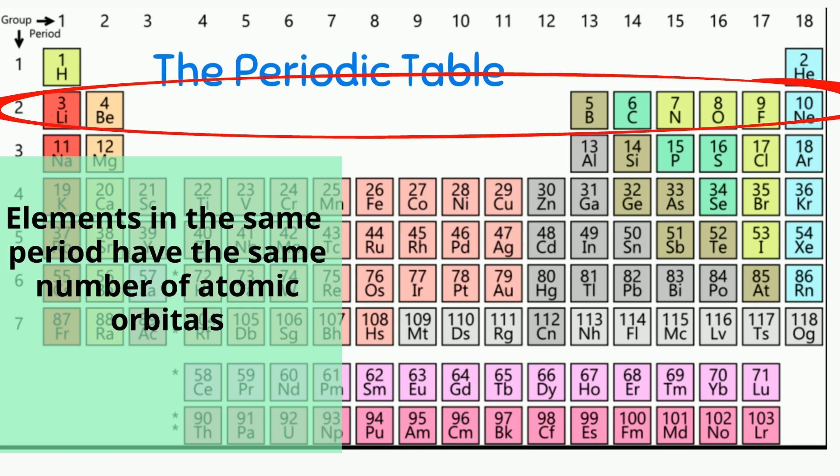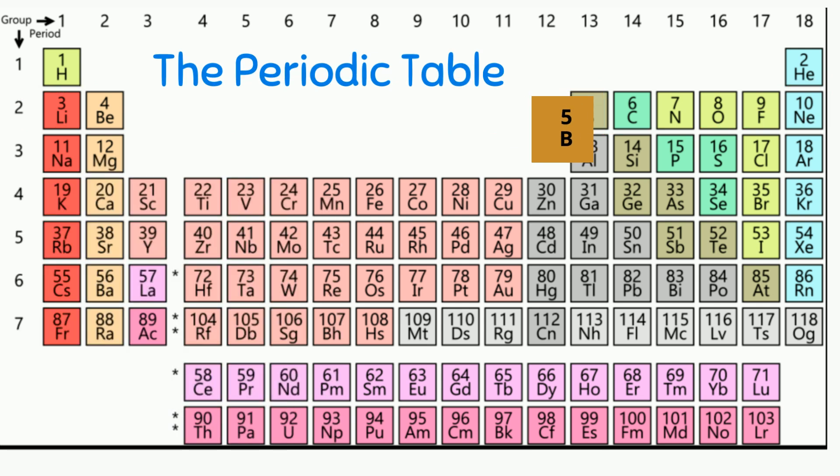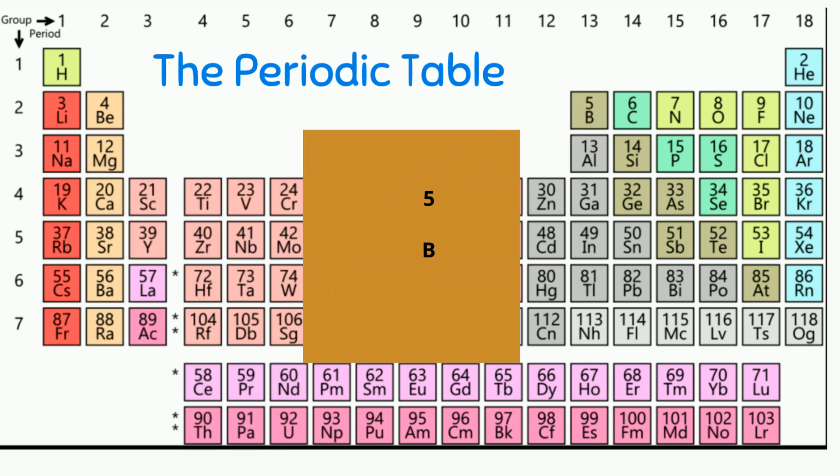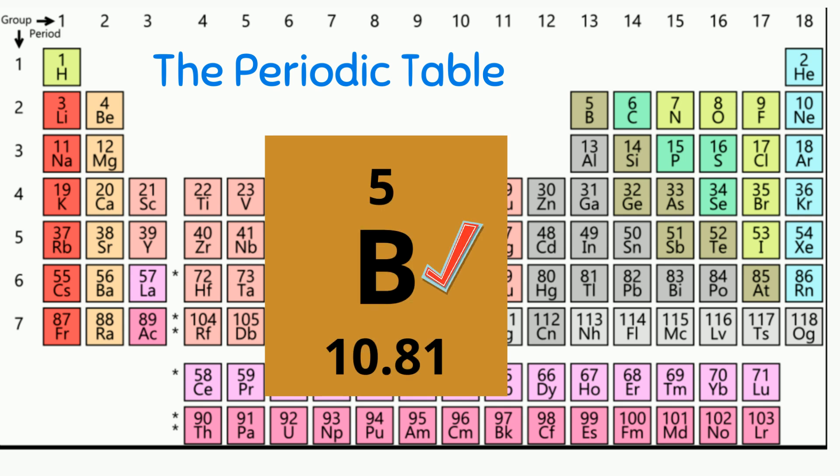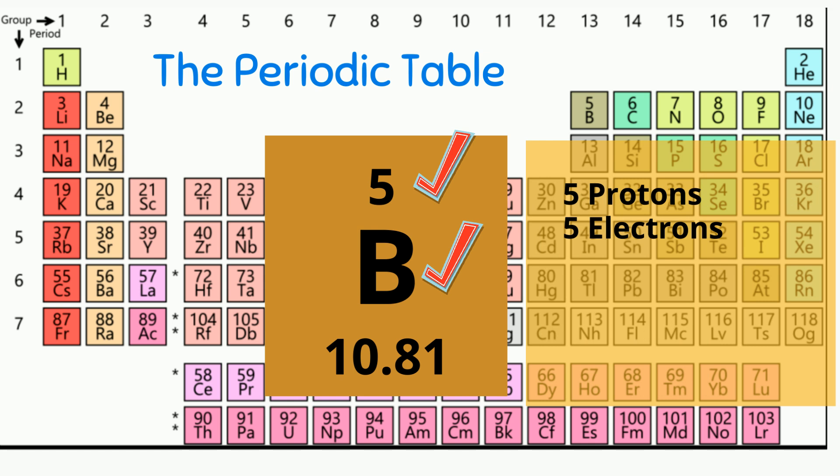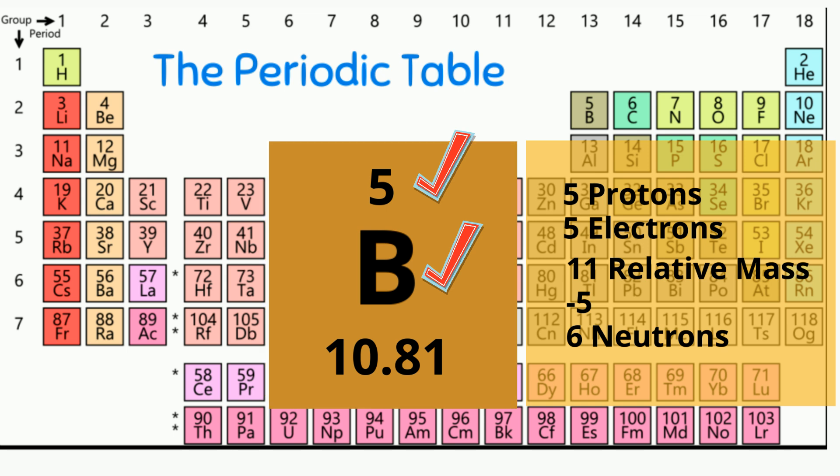Okay let's look at another example. Element 5, Boron. Boron has a symbol B. It has an atomic number of 5, so it has 5 protons. So it would have 5 electrons since it has a neutral charge. It has a relative mass of 10.81. So I will round that to 11. 11 minus 5 equals 6. So it has 6 neutrons.